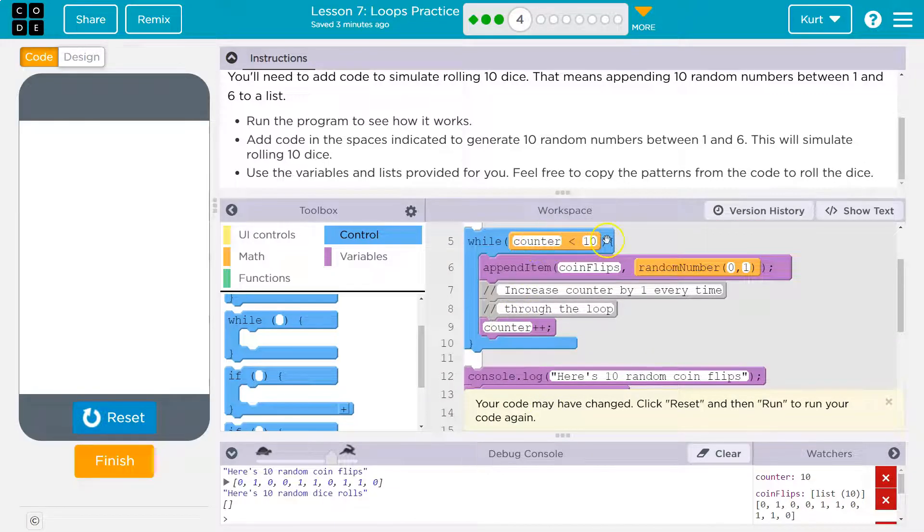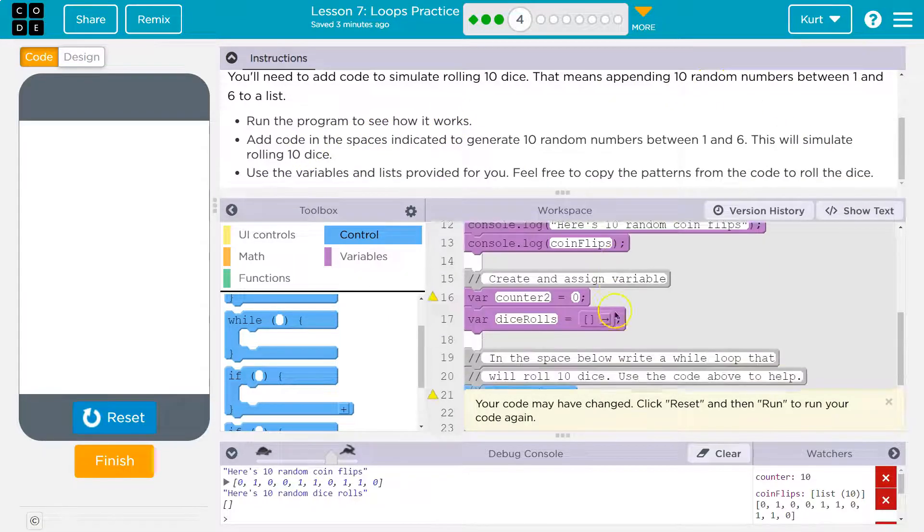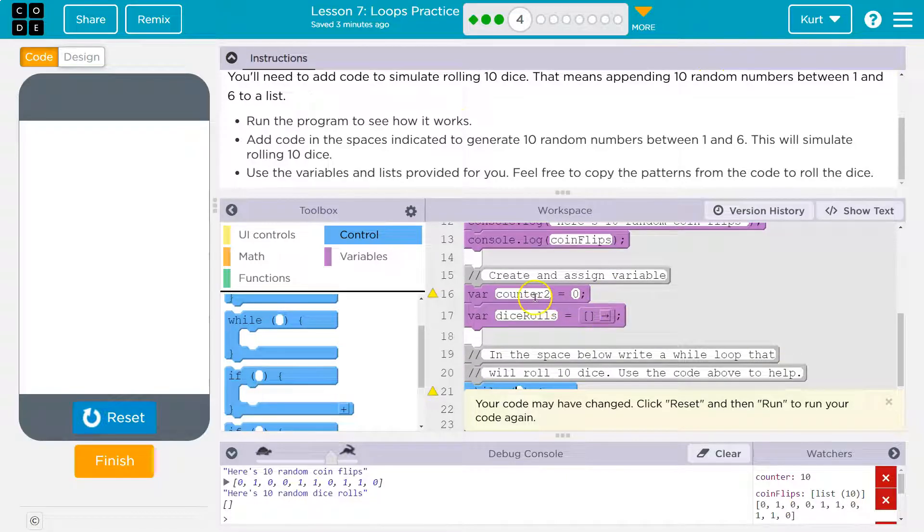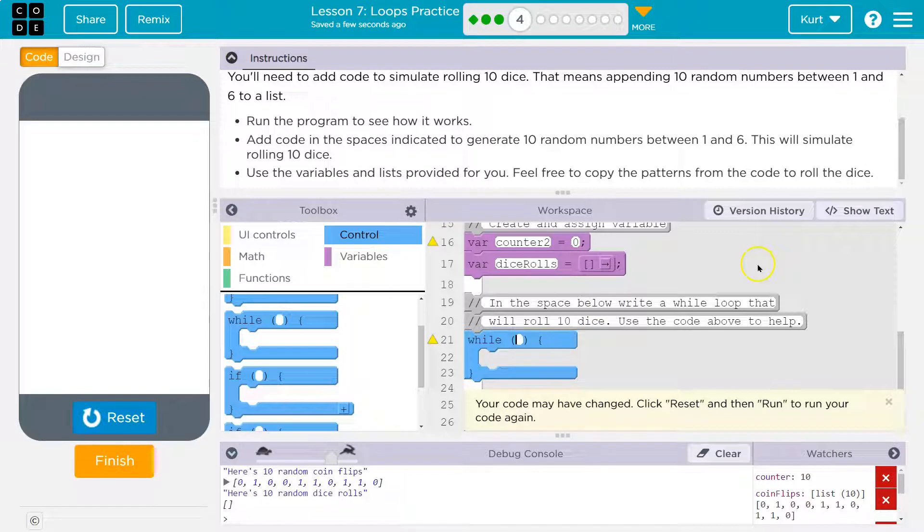Now what do I want in this? Well, they use counter is less than 10. Okay, so we could use counter again if we want to set it equal to zero, except they give us this variable counter two. So that's great. I'm going to say while counter two is less than 10.